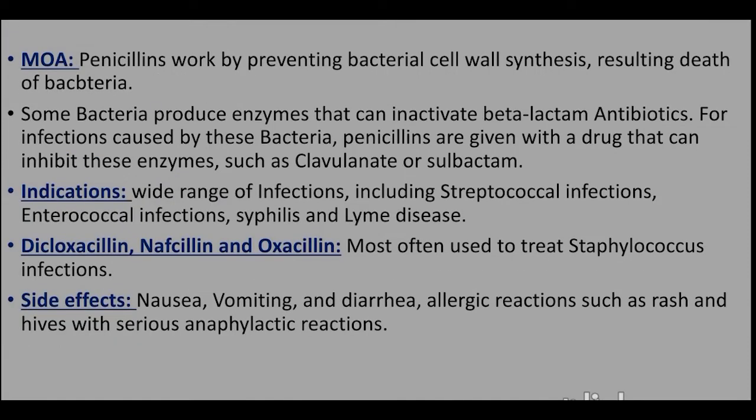Mode of action of penicillins: Penicillins work by preventing bacterial cell wall synthesis, resulting in death of bacteria. Some bacteria produce enzymes that can inactivate beta-lactam antibiotics. For infections caused by these bacteria, penicillins are given with a drug that can inhibit these enzymes, such as clavulanate and sulbactam.